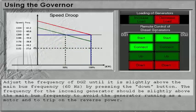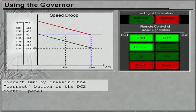Adjust the frequency of DG2 until it is slightly above the main bus frequency by pressing the down button. The frequency for the incoming, connect DG2 by pressing the Connect button in the DG2 control panel.